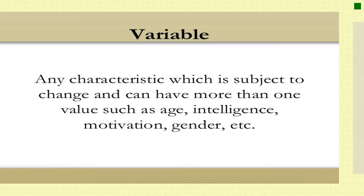Let us define first what a variable in research is. In research, there are characteristics which the researchers assign more than one value. For example, we have the age, the achievement test, gender, height, weight, and others. These are the variables in research.